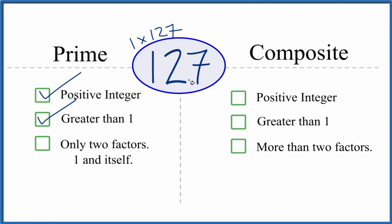It turns out that there are no other factors of 127, so there are only two factors. That means 127 is a prime number. But is it a composite number? Well, it's a positive integer, it's greater than one.